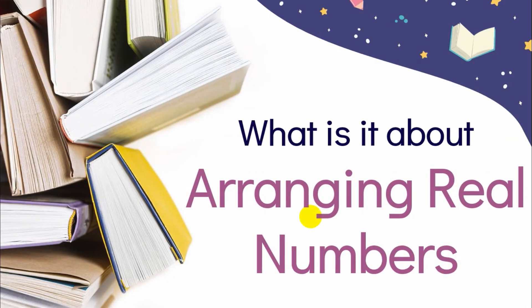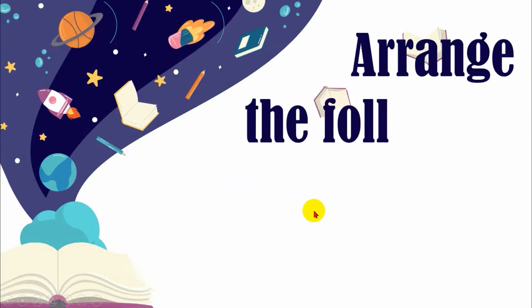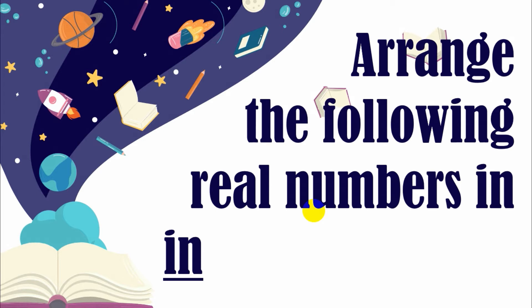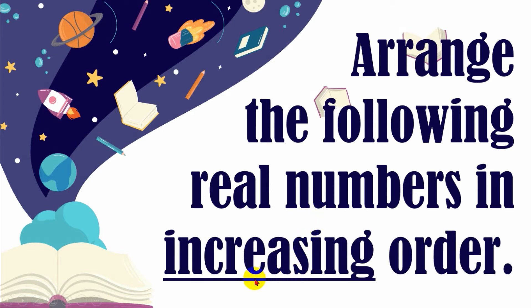So what is it about arranging real numbers? Let's have the following. Arrange the following real numbers in increasing order. When we say increasing, that means we're going to arrange a number from the least to the highest. When we say real numbers, these are any numbers — it may be a natural number, an integer, a fraction, a decimal number, or it may be an irrational number.